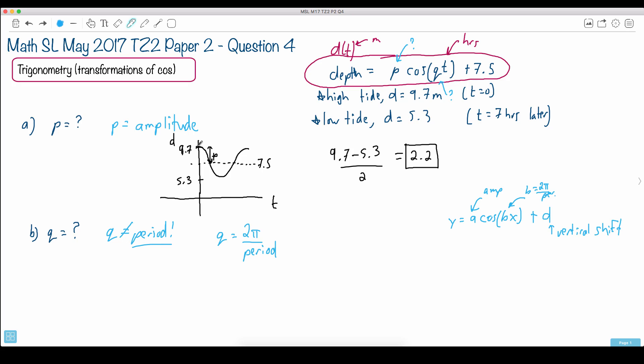But they do tell us this. Remember they told us that high tide happened at T equals 0, but watch carefully. They told us something else. They told us that the low tide happened at 5.3, but they said it happened 7 hours later. That's at T equals 7.